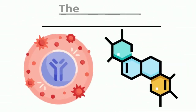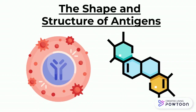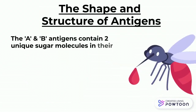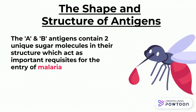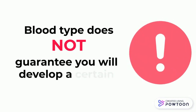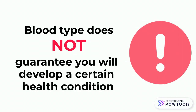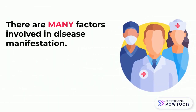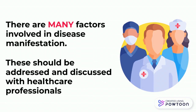And finally, the actual shape and structure of the antigens themselves play a role in acquiring pathogens. For example, the A and B antigens contain two unique sugar molecules in their structure which act as an important requisite for the entry of malaria, thus making individuals with A and B antigens more susceptible to malaria than blood type O individuals. Despite these common trends, it is important to note that having certain blood types does not in any way guarantee that you will develop a certain health condition — it only indicates susceptibility. There are a multitude of other factors involved in disease manifestation which should be addressed and further discussed with your healthcare provider.